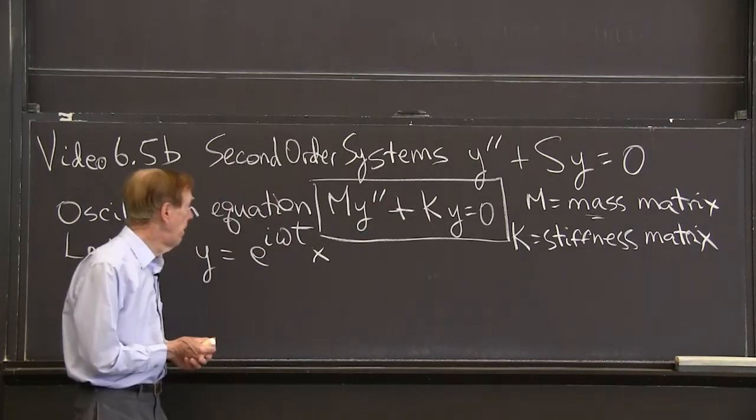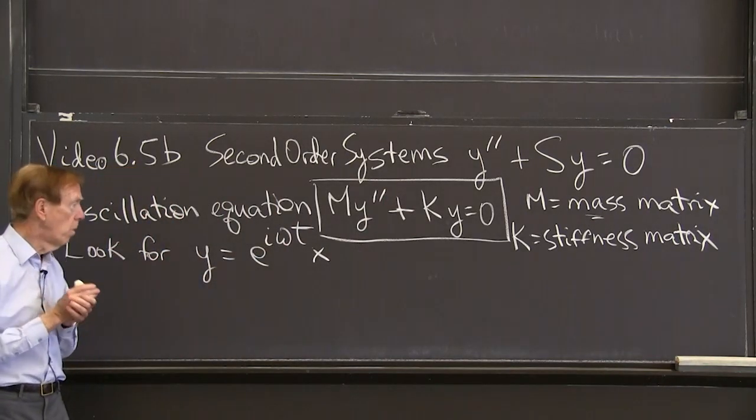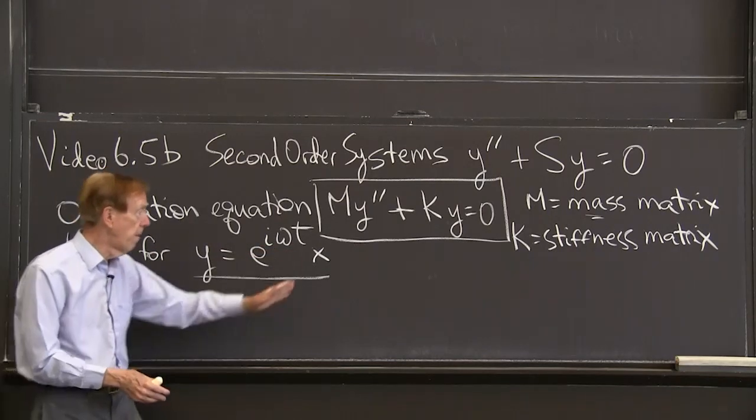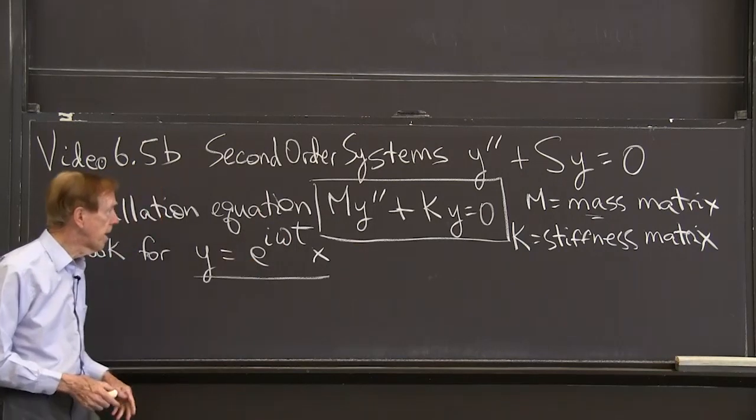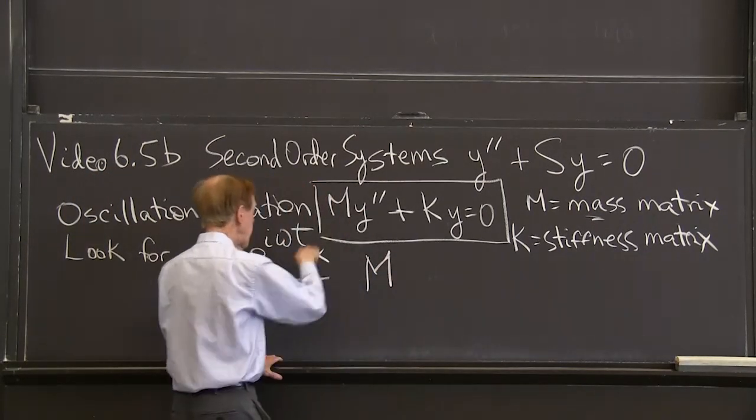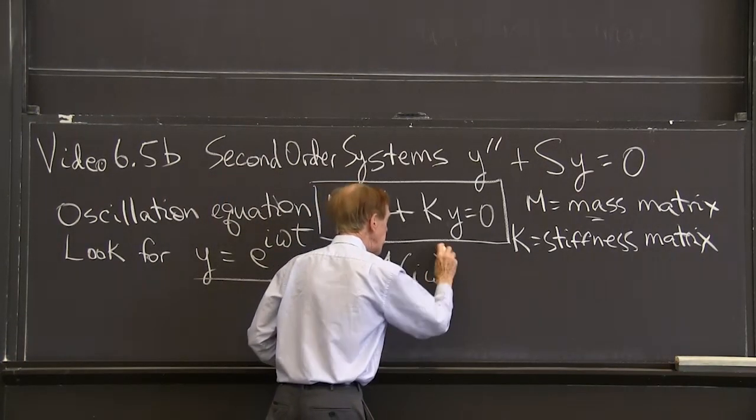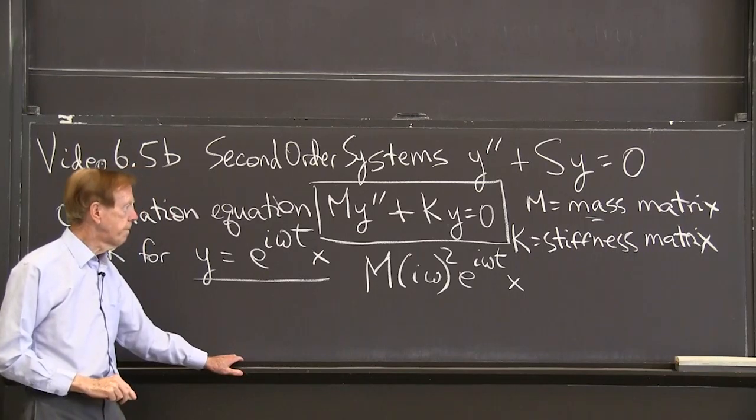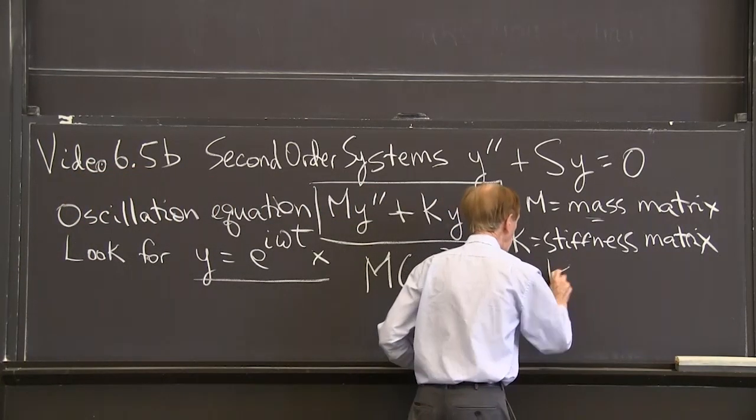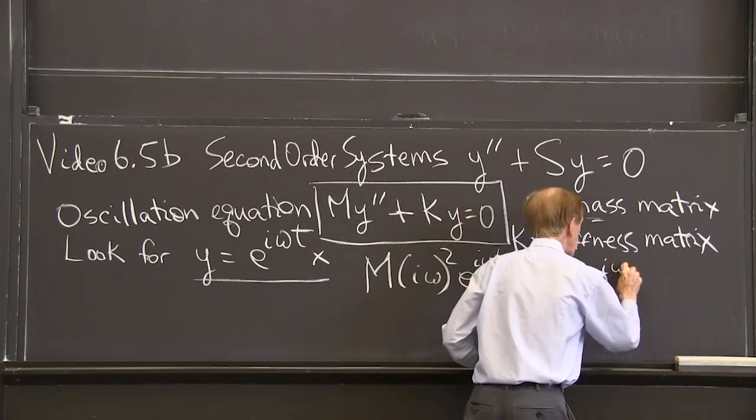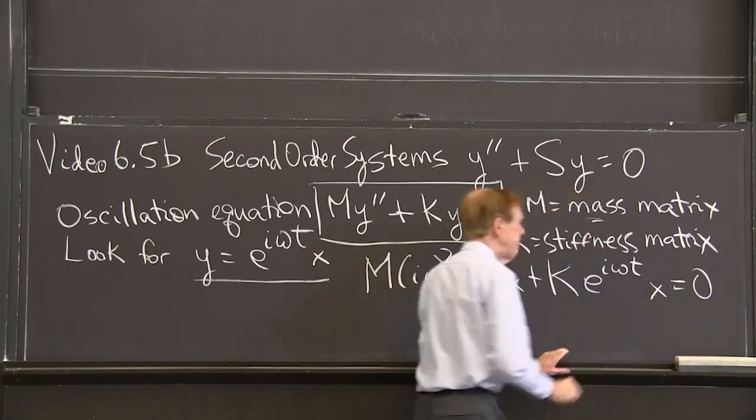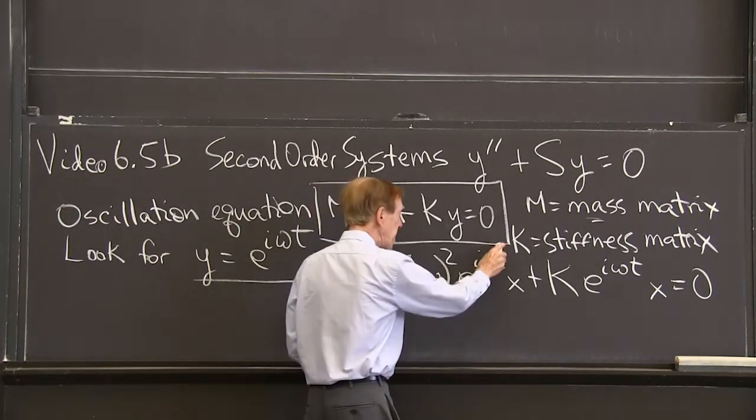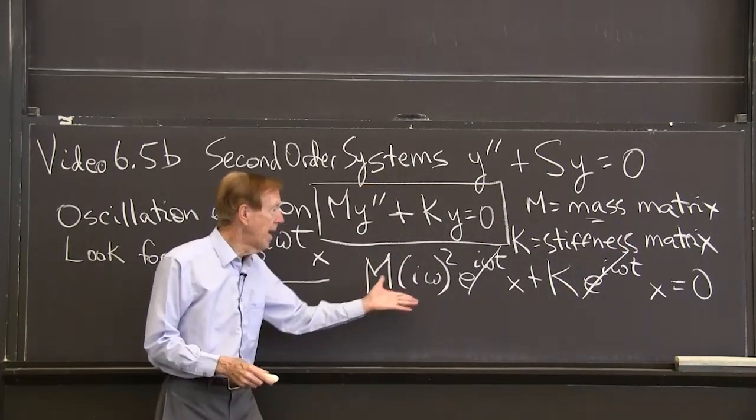Let's suppose we've got them. How do we solve them? We look for solutions where time is separate from the vector x. I substitute that into the equation. So I get m, second derivative will bring down i omega twice, e to the i omega t x, plus this term k times e to the i omega t x should be 0. That exponential factor can cancel.